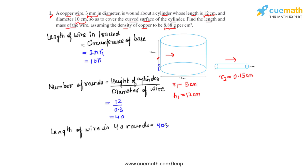We write it as 40 times 10π, which equals 400 times 22/7, giving us the answer as 1257.14 centimeters, or 12.57 meters. We have converted the length of the wire from centimeters to meters. We are done with the first part of the question, which asked for the length of the wire.